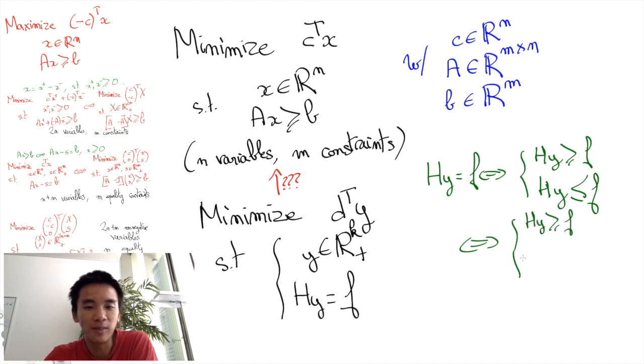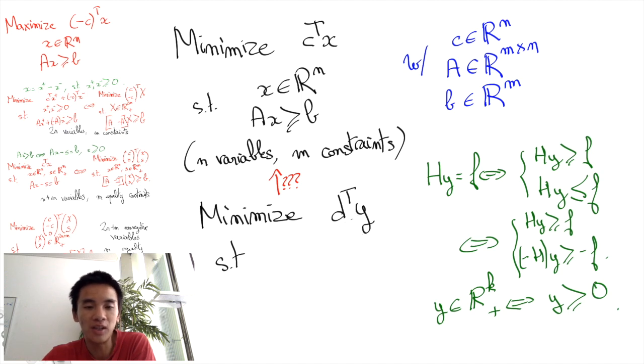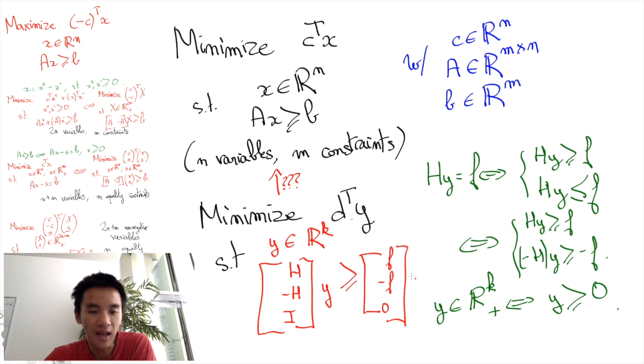Moreover, the latter can be rewritten as -H times Y is greater or equal to -F. And what's more, Y in R^k plus is equivalent to Y greater or equal to 0. Thus, all the constraints of the former program are equivalent to inequalities HY greater or equal to F, -HY greater or equal to -F, and Y non-negative. We can now simply define X equals Y, C equals D, and A equals the big matrix [H, -H, I] and B equals [F, -F, 0].